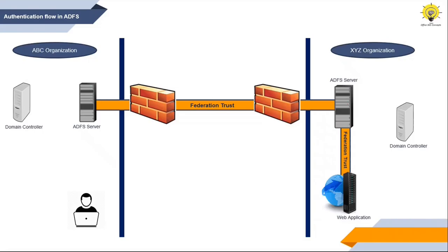Let's understand how authentication flow works in ADFS. In this example, we have two organizations: ABC organization and XYZ organization. ABC organization has a federation trust set up with XYZ organization, and the application of XYZ organization is added as a relying party trust in ABC organization. So the ADFS server of ABC organization has a relying party trust for this particular application. A user from ABC organization is trying to access an application hosted in XYZ organization.